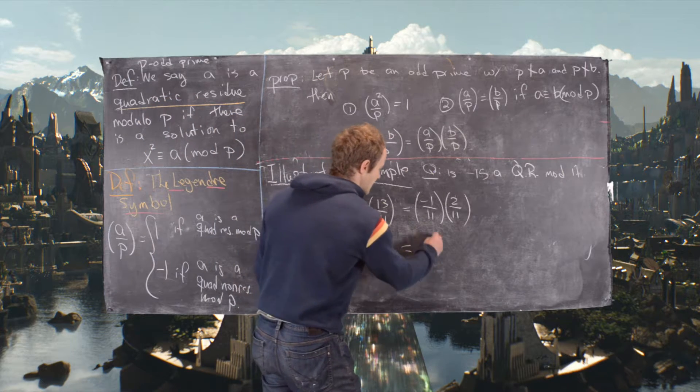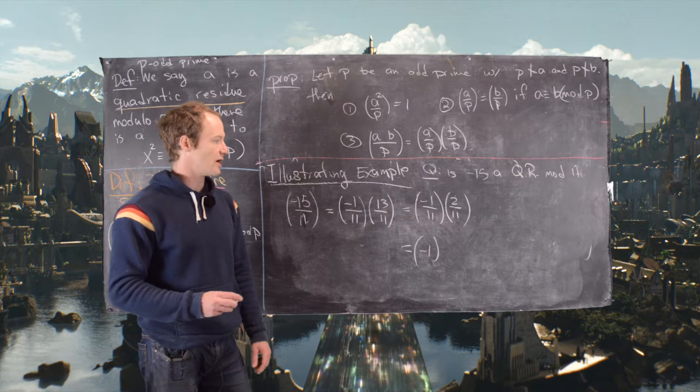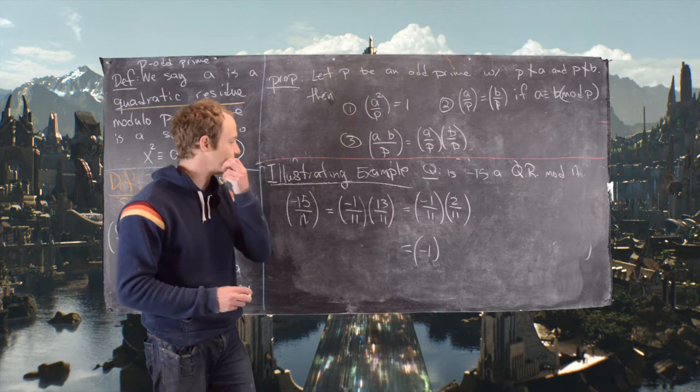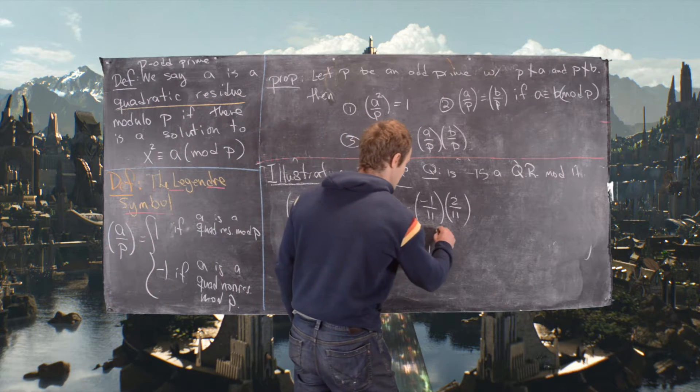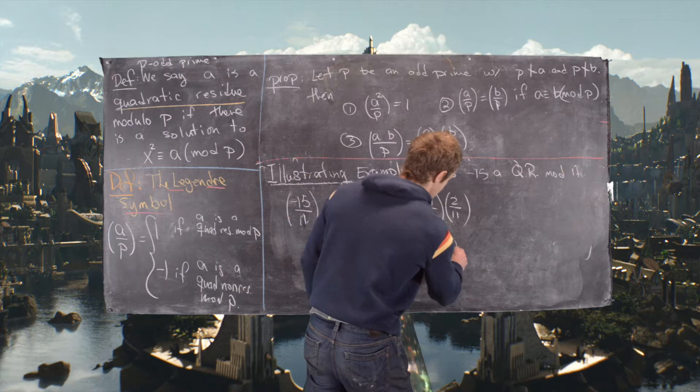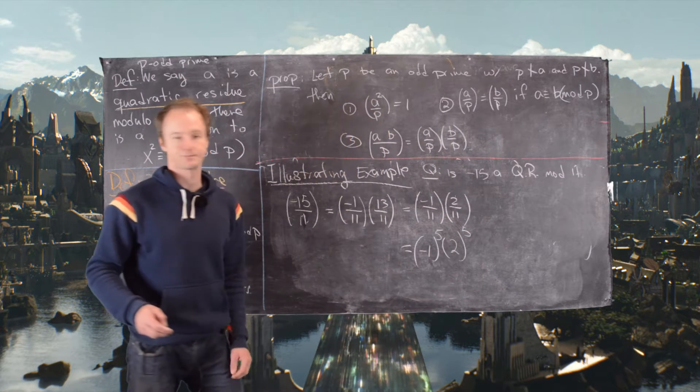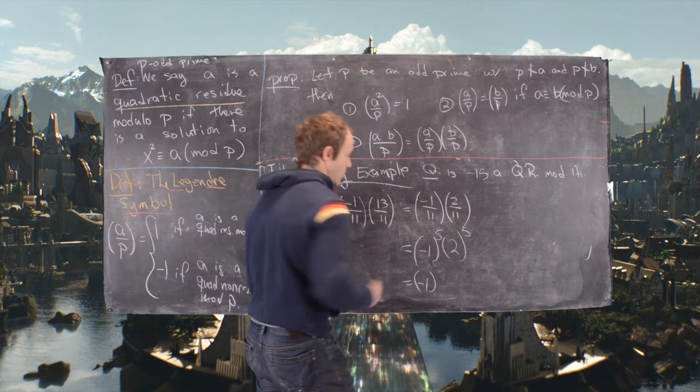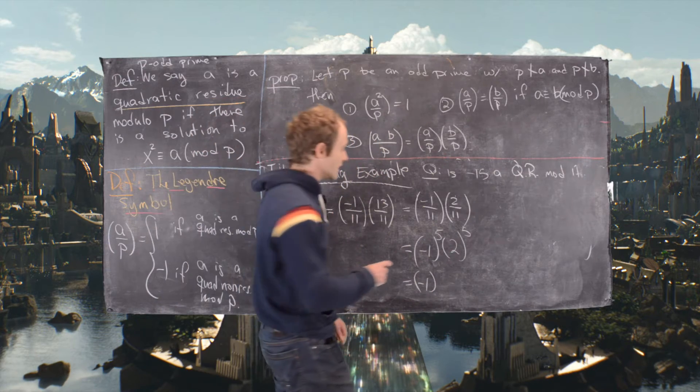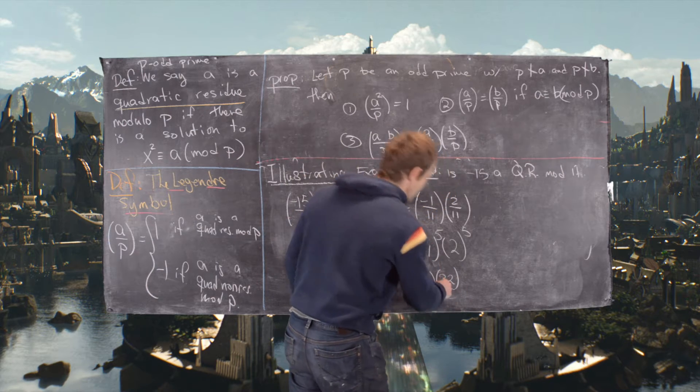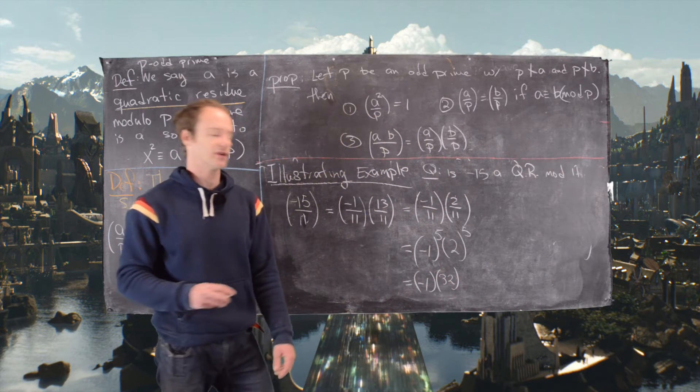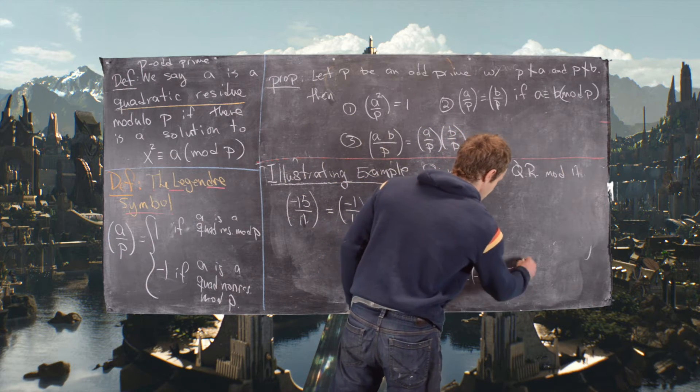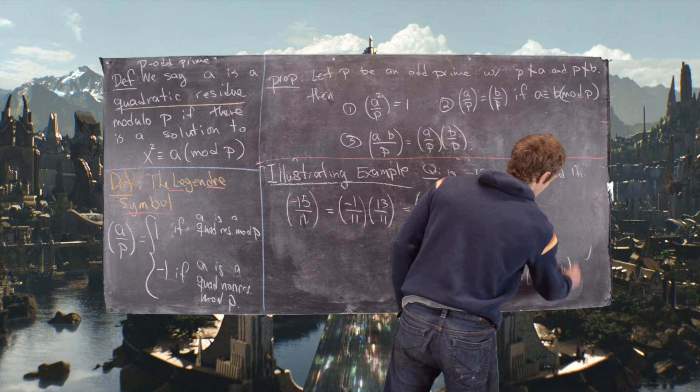So this is negative one to the p minus one divided by two. Let's see, p minus one divided by two in this case will be 10 divided by two, which is five. And then we have two to the five. Now negative one to the five is obviously negative one. Two to the five is obviously 32. And notice 32 is one less than 33, which is negative one. So this is negative one times negative one, which is congruent to one mod 11.